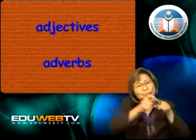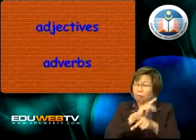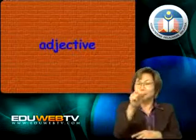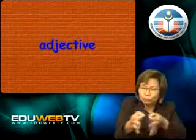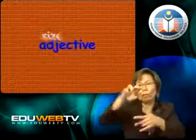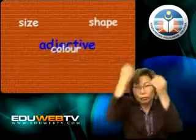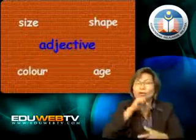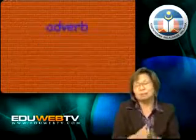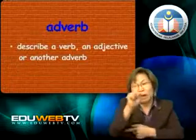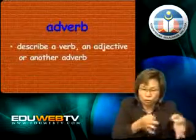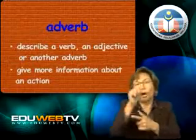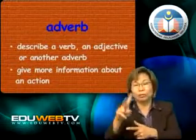Be careful about using adjectives and adverbs. An adjective is used to describe a noun or pronoun to give more information about the size, shape, color, or age of a person, a place, or a thing. An adverb is used to describe a verb, an adjective, or another adverb to give more information about an action or the state of the action.